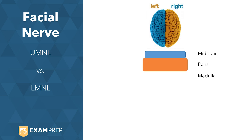For demonstration purposes the pons is shown a little bit bigger here. I want to show you the location of the facial nerve nuclei, which is within the pons. The facial nerve's motor innervation is to the muscles of facial expression. When we are assessing upper motor neuron versus lower motor neuron lesions, we use this innervation to help determine whether the nerve is upper or lower.